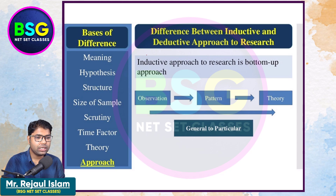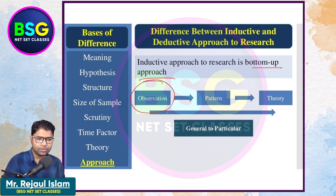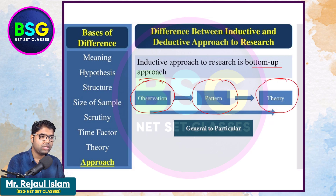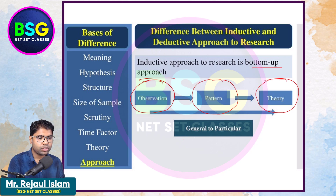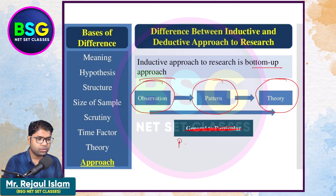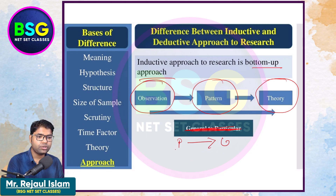The inductive approach to research is a bottom-up approach. First we do observation — Ram is mortal, Sham is mortal — the pattern comes up. We are supportive of building the theory from this real observation. We talk about a particular question and arrive at a generalization. So, particular to general is the inductive approach.